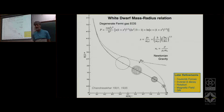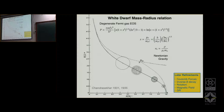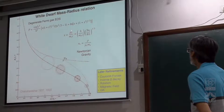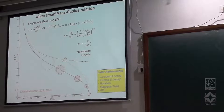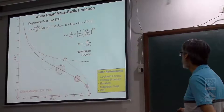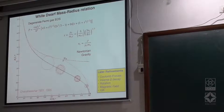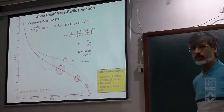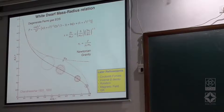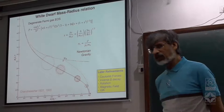This is true for all species, not just electrons. For neutron degeneracy pressure, you substitute the neutron number density. Here x is the Fermi momentum divided by m_e c, expressed in this fashion. You can see that the Fermi momentum is proportional to the number density to the power of one-third. In white dwarfs, the number density comes from the mass density divided by the mean molecular weight mu_e times the proton mass.